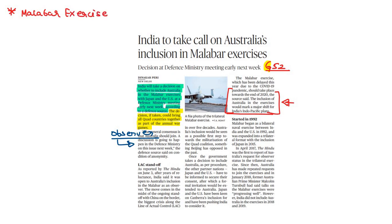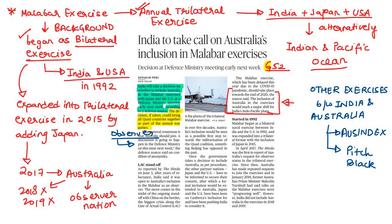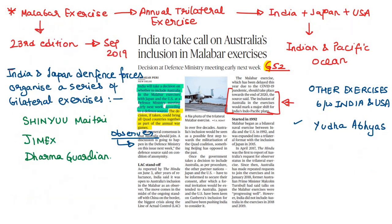The Malabar Exercise is an annual trilateral exercise between India, Japan, and USA, conducted alternately in the Indian Ocean and Pacific Ocean. It began as a bilateral exercise between India and the US in 1992 and was converted into a trilateral exercise by adding Japan in 2015. Australia has not been formally added so far. In 2017 it participated only as an observer. Other exercises: India-Australia — Aussie Index and Pitch Black; 2019 saw the 23rd edition of Malabar exercise.